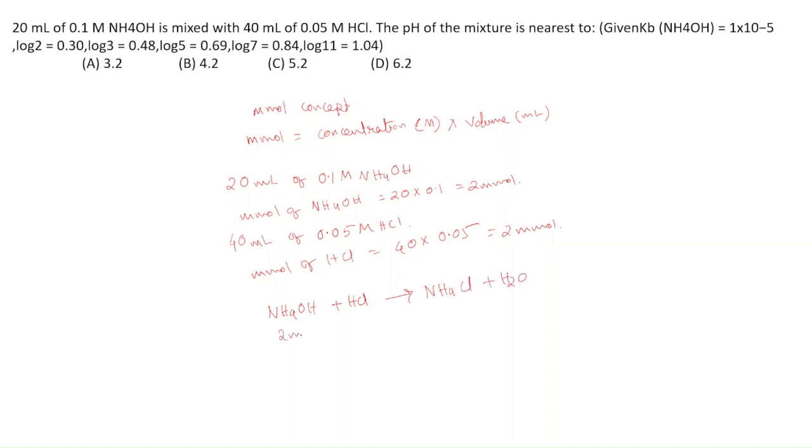NH4OH is 2 millimoles, HCl is also 2 millimoles. At the beginning, there is no NH4Cl or H2O. They react to form 2 millimoles of NH4Cl. After the reaction, there is no base and no acid present. The only thing present is NH4Cl, which is a salt of weak base and strong acid.